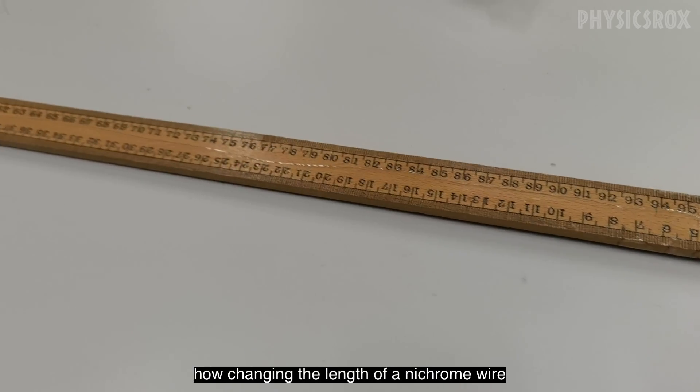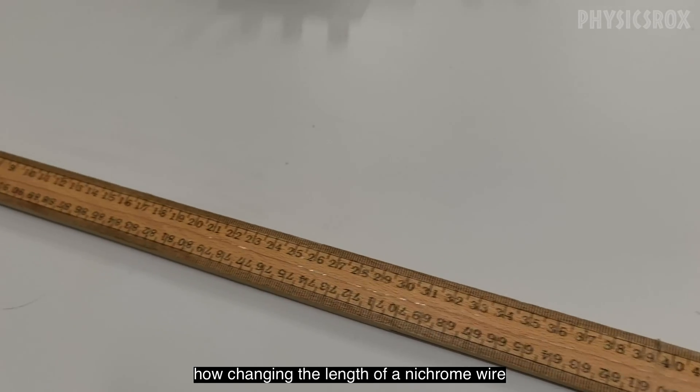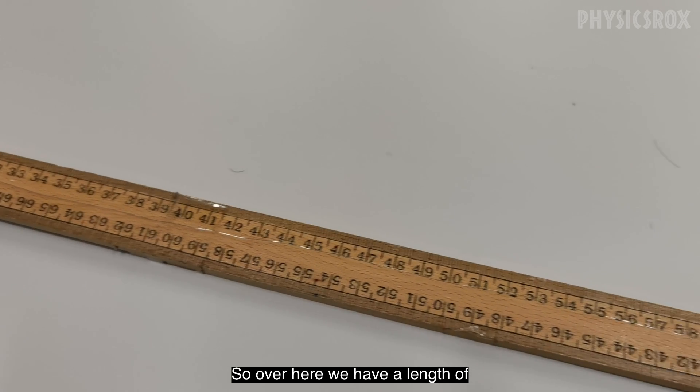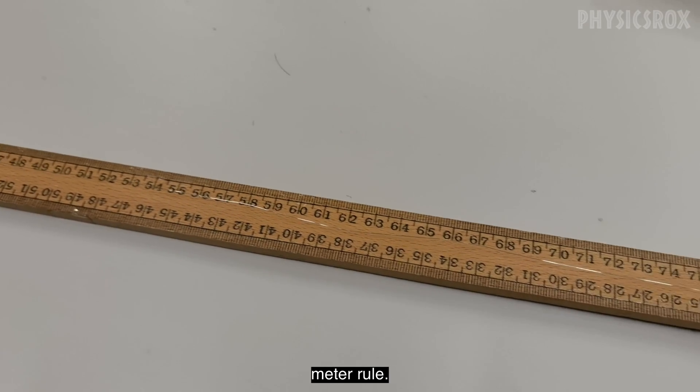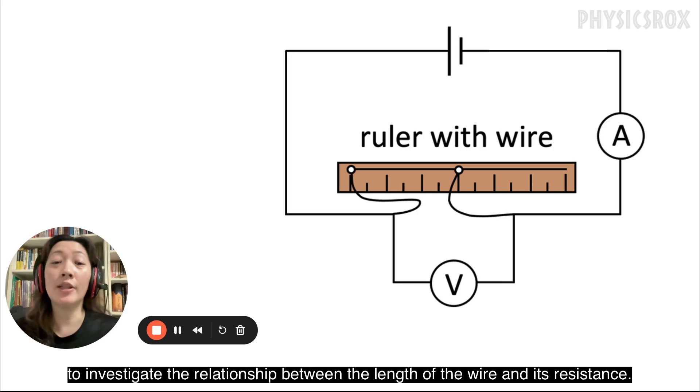In this experiment, we're going to look at how changing the length of a nichrome wire changes its resistance. Over here we have a length of nichrome wire that has been taped to a meter rule. This is the circuit diagram for the experiment to investigate the relationship between the length of the wire and its resistance.